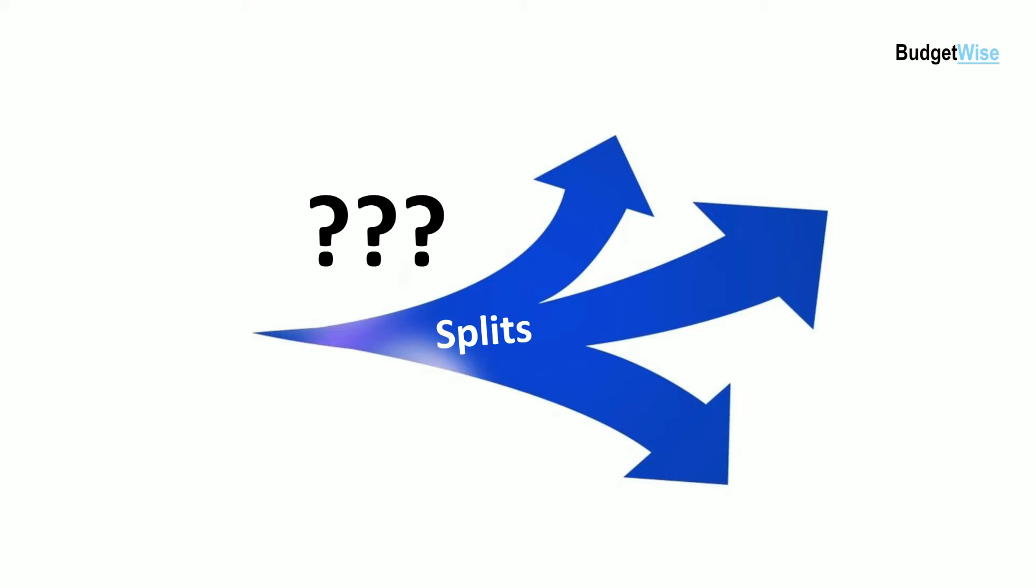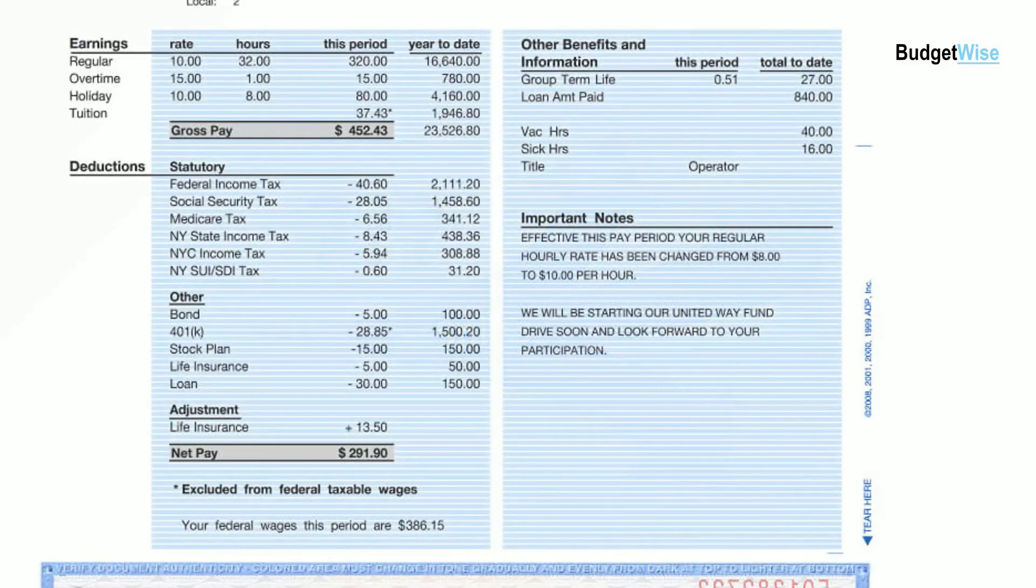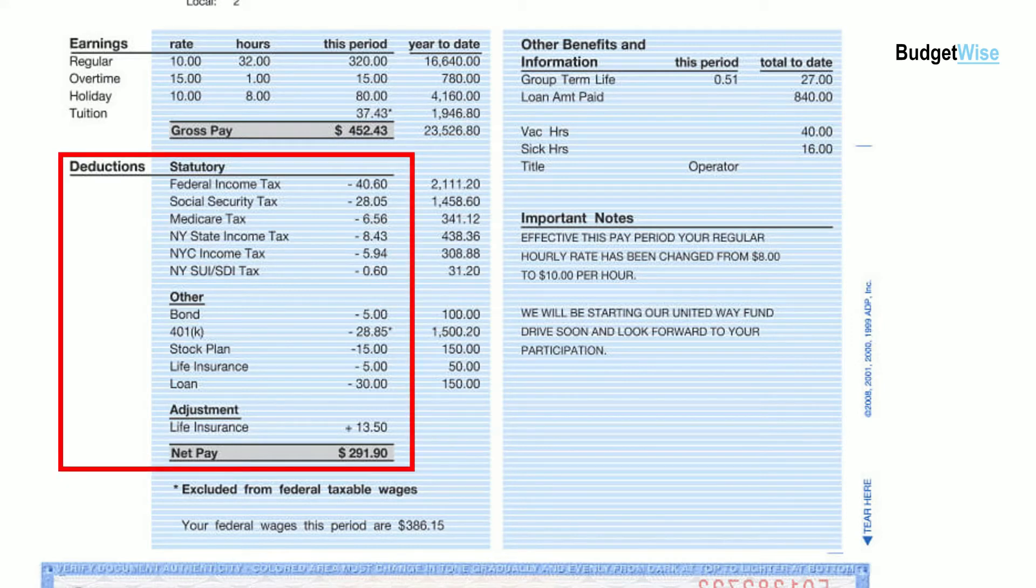So why would you even want to do this? Well, many transactions that show up in our bank accounts or on our credit cards are for one dollar amount, but they actually may cover many different sub-transactions. Probably one of the most common examples of this is your paycheck. The amount deposited into your bank account, as you're probably aware, is not the total amount you made. It's how much you earned minus taxes and the cost for various benefits like health and dental.